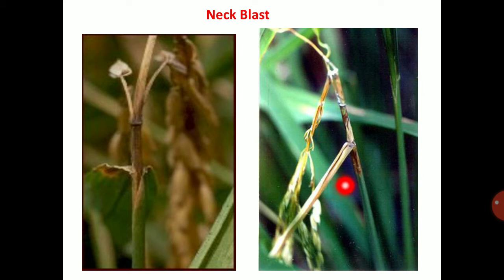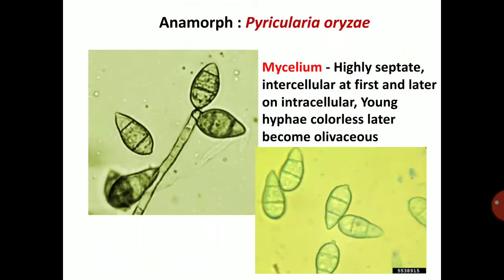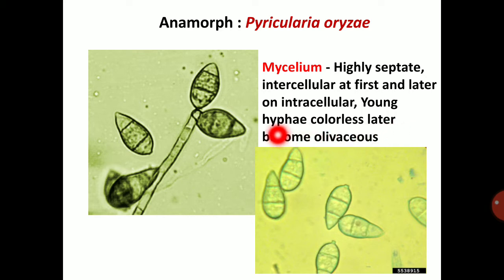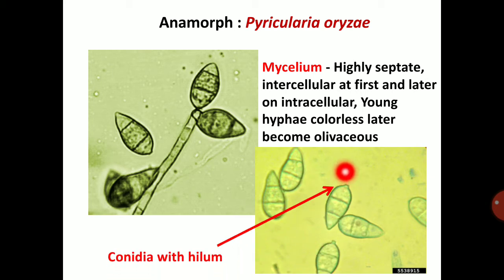Neck blast gives the topple-down symptom. Regarding taxonomic characters of Pyricularia: the mycelium is highly septate, intercellular at first and later intracellular. Young hyphae are colourless, later becoming olivaceous. It produces geniculate conidiophores and septate conidia with a hilum — a slight projection at the base where the conidium is attached.